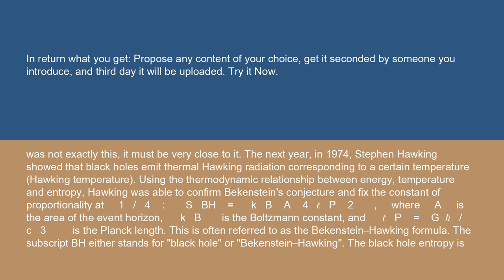The next year, in 1974, Stephen Hawking showed that black holes emit thermal Hawking radiation corresponding to a certain temperature, Hawking temperature. Using the thermodynamic relationship between energy, temperature, and entropy, Hawking was able to confirm Bekenstein's conjecture and fix the constant of proportionality at 1/4.